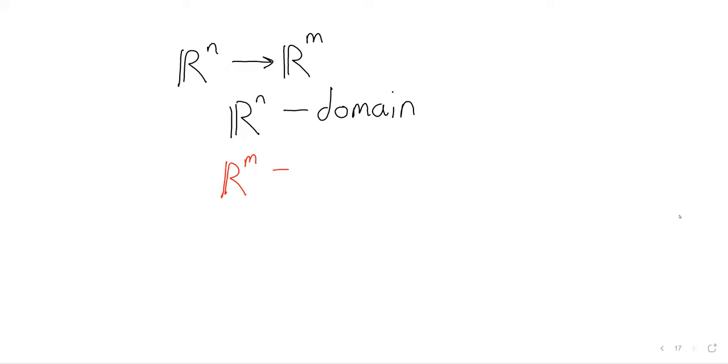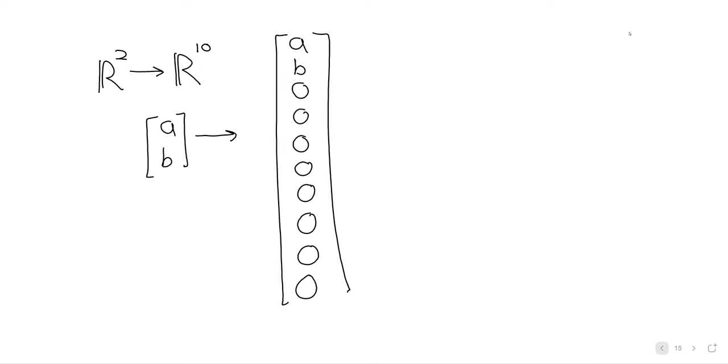So you might think domain and range, but you'd be incorrect. Domain and codomain. That's a word that maybe gets introduced, I don't know, in calculus maybe, and then not used a lot. But we've got the domain, we've got the codomain. And unlike, the codomain is different from the domain, because every vector in the domain is mapped to something, and that something is contained in Rm, but it might be smaller than Rm. Like here, our codomain is R10, but there are vectors in R10 that are just never mapped to by this function.